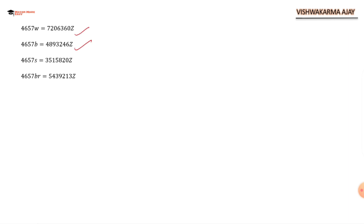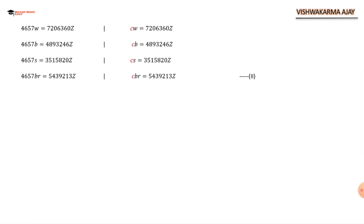One important thing to note: 4657 cannot divide any of the coefficients of Z on the right-hand side. If it cannot divide perfectly, the result would be a decimal, and the number of animals cannot be a fraction. Therefore, Z must be a multiple of 4657 — only then will 4657 cancel and give us an integer value.